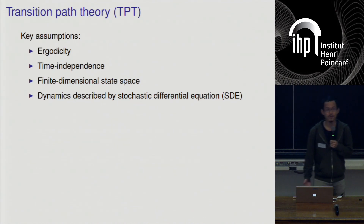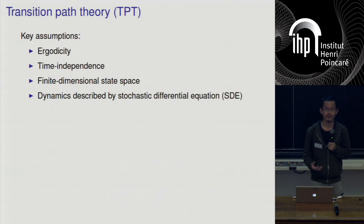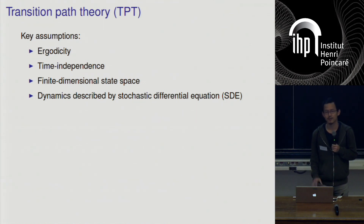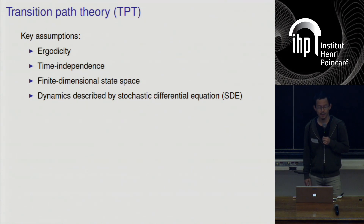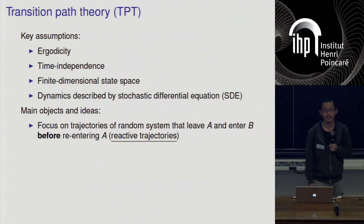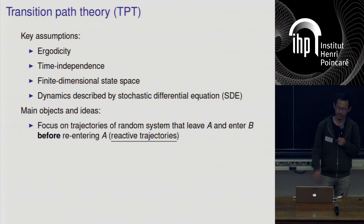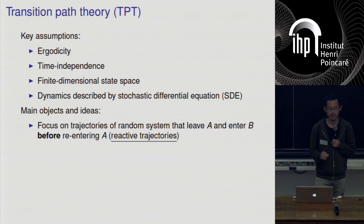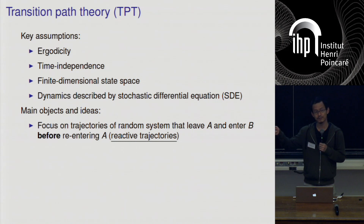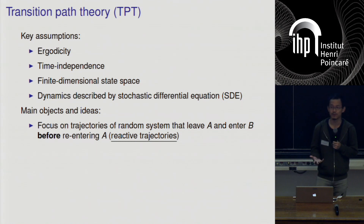The foundation of our method is transition path theory, what I will refer to as TPT. Key assumptions are that the system is ergodic, time-independent, the state space is finite dimensional, and the dynamics are described by an SDE. The main objects and ideas of this theory: we focus on trajectories of a random system that leave some metastable set A and hit another metastable set B before re-entering A. These are called reactive trajectories. We've seen an example of this already in Freddie Boucher's talk, where he spoke about committer functions — the probability of hitting B before going back to A.